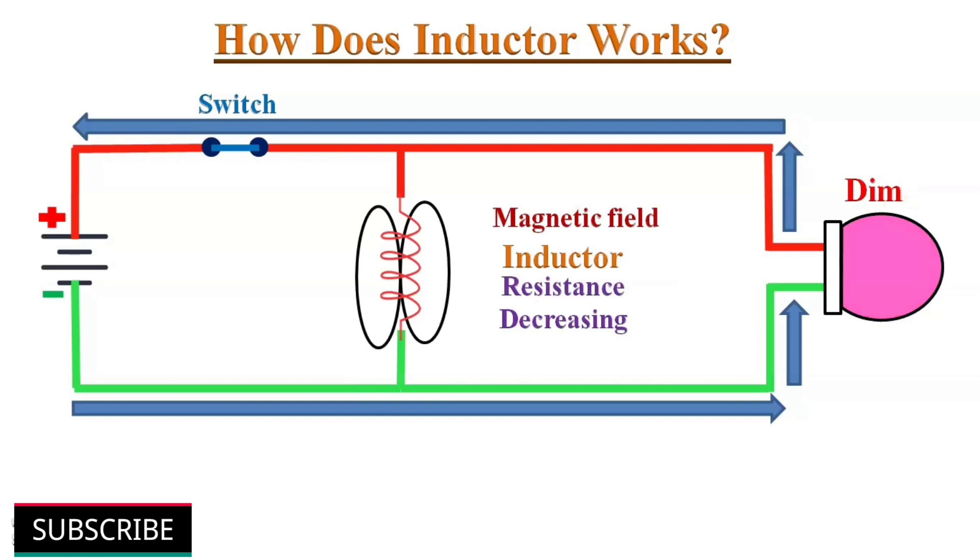A magnetic field will begin to form in the inductor. So the inductor's resistance will reduce and allow some current to flow through it. The lamp gets dimmer because of the reduced current flow through the filament. As the magnetic field keeps building in the inductor, its resistance keeps decreasing.